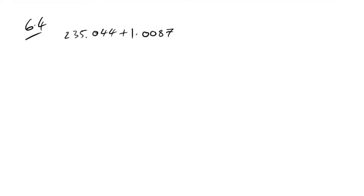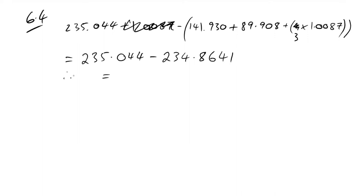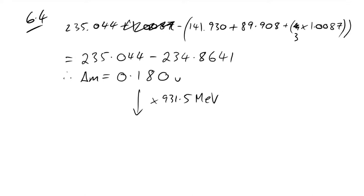Question 6.4: binding energy calculation. Total mass going in: uranium + 1 neutron. Take away mass afterwards: xenon + strontium + 3 neutrons (the 1 neutron on the left cancels with one of the 4 on the right). The mass defect is 0.1799 u ≈ 180 u. Converting using 1 u = 931.5 MeV, the energy released is 168 MeV (to 3 sig figs).